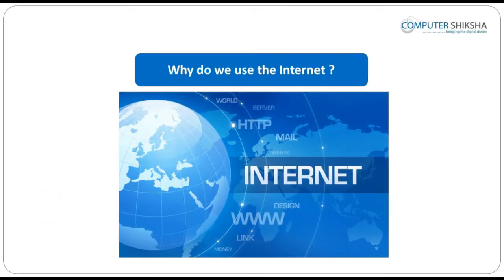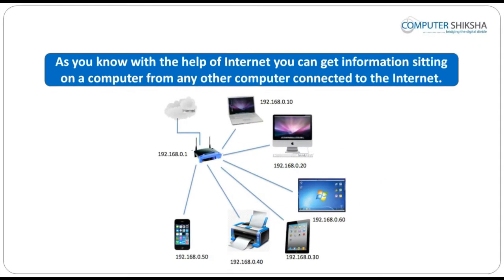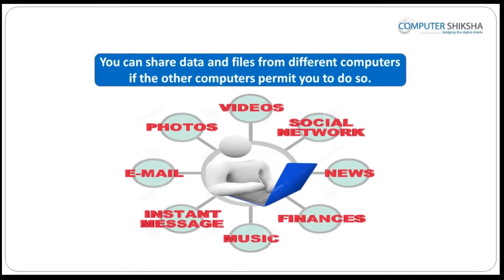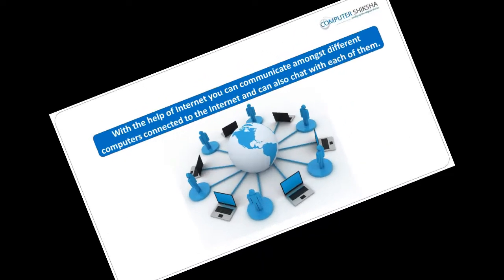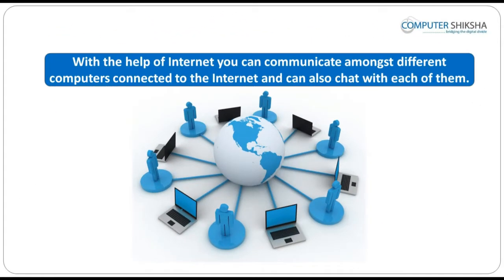Why do we use the internet? With the help of internet, you can get information sitting on a computer from any other computer connected to the internet. You can share data and files from different computers if the other computers permit you to do so. With the help of internet, you can communicate amongst different computers and can also chat with each other.